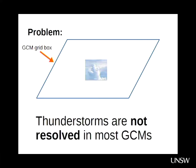Here's the problem in understanding thunderstorms in a future climate. A GCM grid box might have a size of 50 to 200 kilometres, and a thunderstorm has a scale on the order of 10 kilometres. Even a big organised area of thunderstorms might have a size of 100 to 200 kilometres, which still scarcely fits within a GCM grid box. Thunderstorms are simply not resolved in most GCMs.